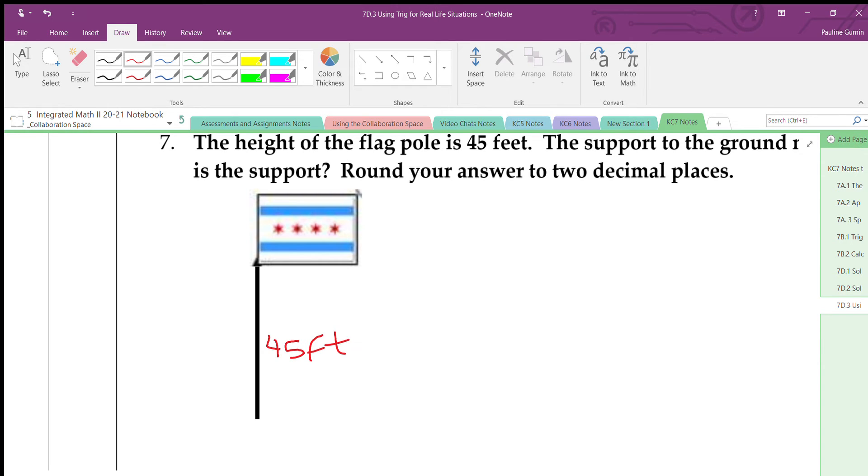Now the support is like a rope or something like that that's connected to the pole in case there's strong gusts of wind. So that's the support. We don't know what it is. We are told that it's connected at a 70 degree angle and the flagpole is attached to the ground in a perfectly straight way, right? That's the best way to attach a pole to the ground. So it forms a 90 degree angle.